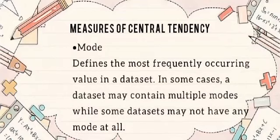Mode defines the most frequently occurring value in a data set. In some cases, a data set may contain multiple modes, while some data sets may not have any mode at all.